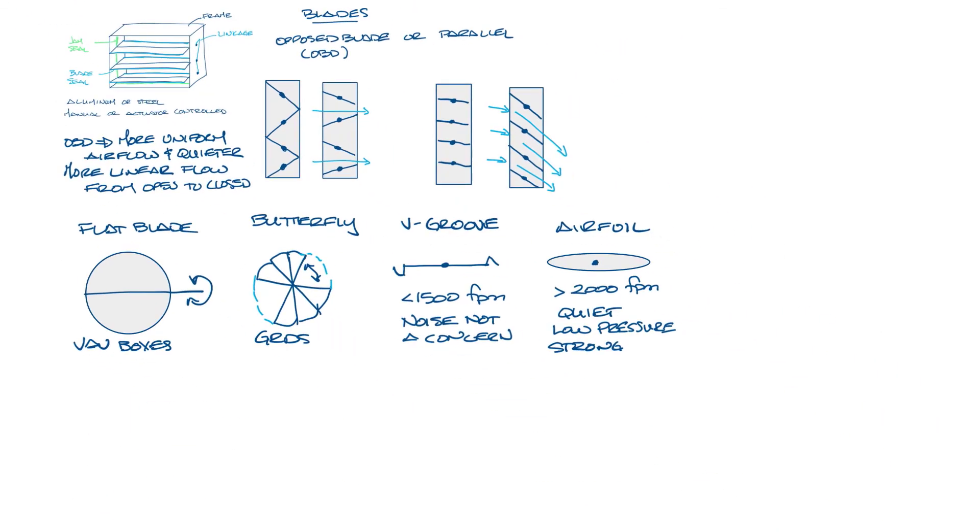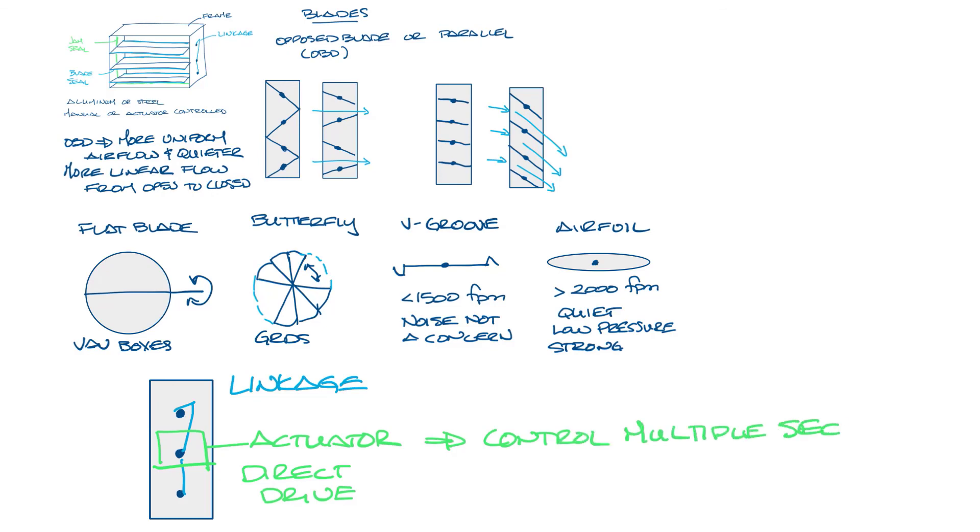The linkage connects the blades together. They are usually at the end of the blade and are driven by a single drive blade. If you mount your actuator here, it would be direct drive. A single actuator may power multiple sections of a damper or there may be one actuator per section. You can also get internally mounted actuators. Dampers can also be fitted with optional devices such as pressure sensors, smoke detectors, and position indicators.